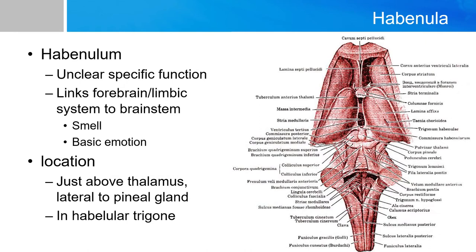This video will focus primarily on the habenulum. The habenulum is a structure located roughly on the midline, dorsal to the thalamus. It sits in a trigonal area called the habenular trigone, a little bit anterior and lateral to the pineal gland. We don't know too much about the specific function of the structure, but we do know that it connects the limbic system and basal ganglia with the brainstem, and therefore takes part in basic emotions and smell, which are both components of the limbic system.